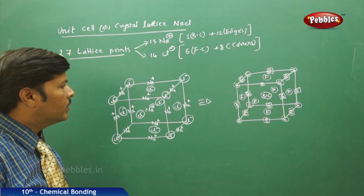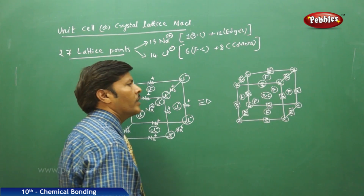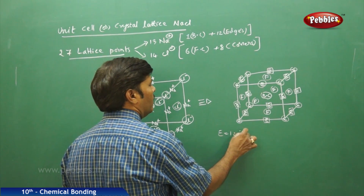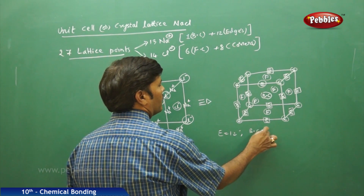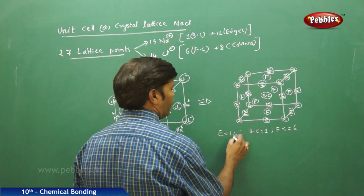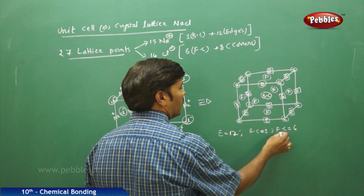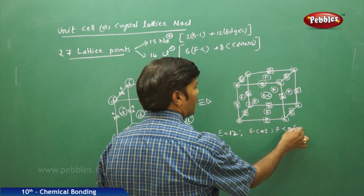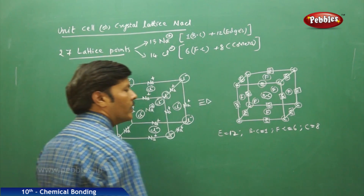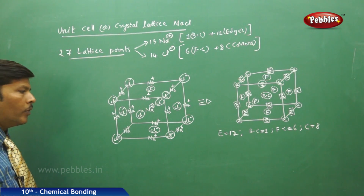To repeat: from this unit cell we have 12 edges, 1 body center, 6 face centers, and 8 corners. This is what a unit cell of a crystal lattice is made up of.